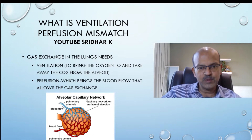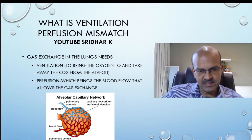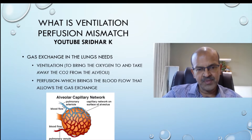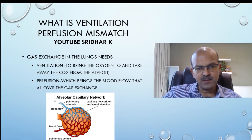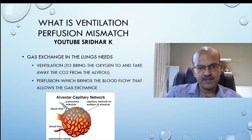Don't be confused by arteriole versus venule going in opposite directions, because this is the lung circulation — pulmonary arteries bring deoxygenated blood to the lungs and pulmonary veins carry oxygenated blood to the atrium.